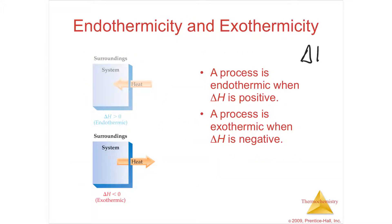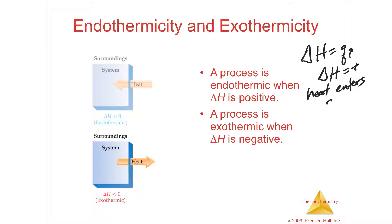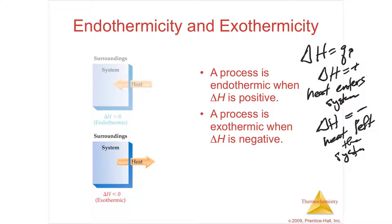So if delta H equals Q at constant pressure, and Q is positive — meaning heat is positive at the end, it's going to be the end minus the beginning — then if the amount of heat has gone up, the change in enthalpy has gone up and will be positive. So if your delta H is positive, then heat enters the system. If delta H is negative, then heat left the system to the surroundings.